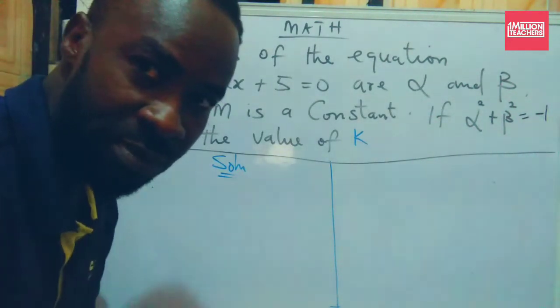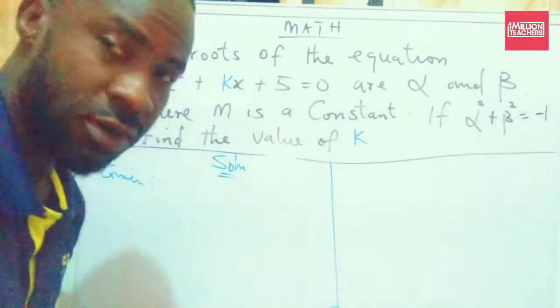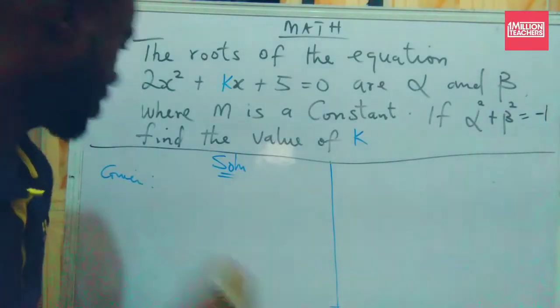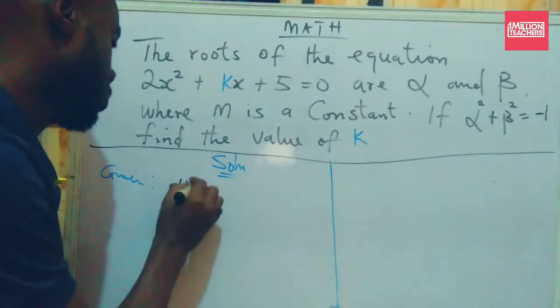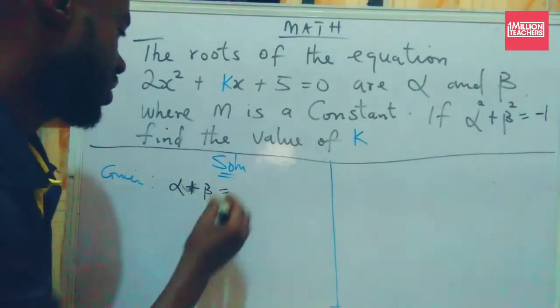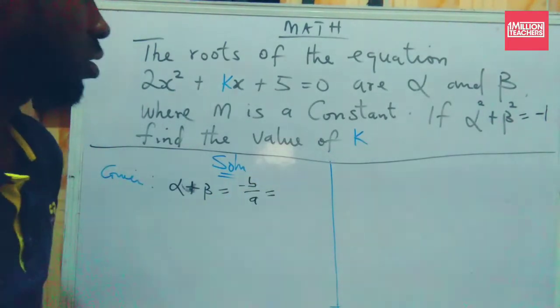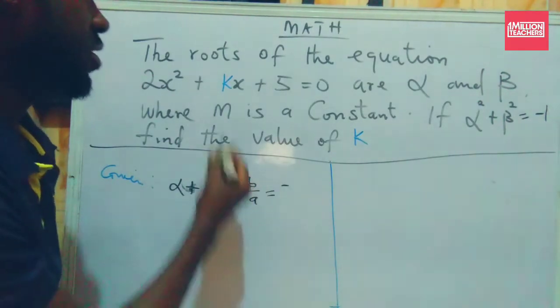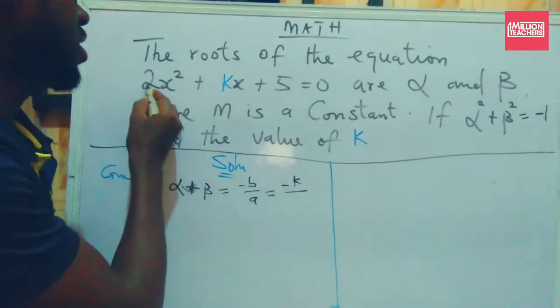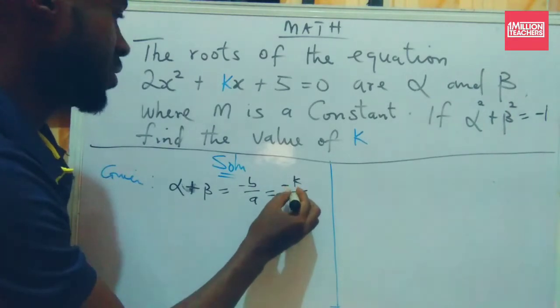To solve this particular problem, all we need is our knowledge of sum and product of roots of a quadratic equation. Recall that our sum, which is given as alpha plus beta, is given as minus b over a. Our minus b is this middle term k, and our a is the first term, the coefficient of the first term, which is 2.